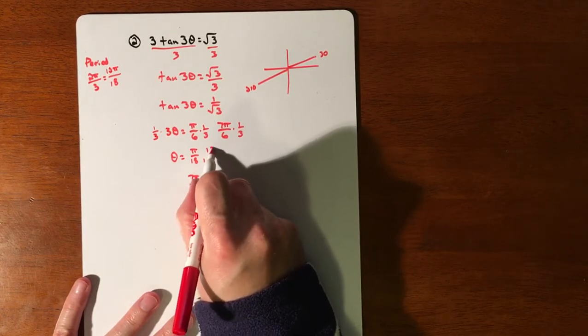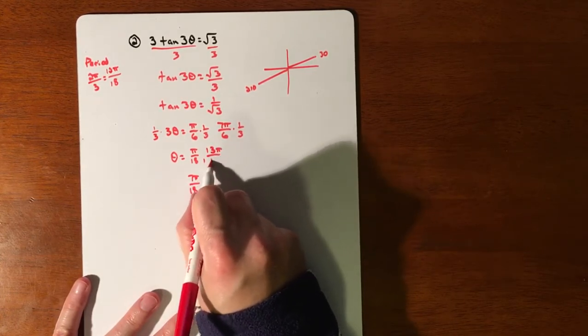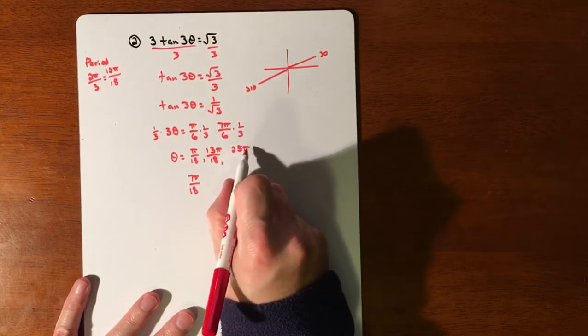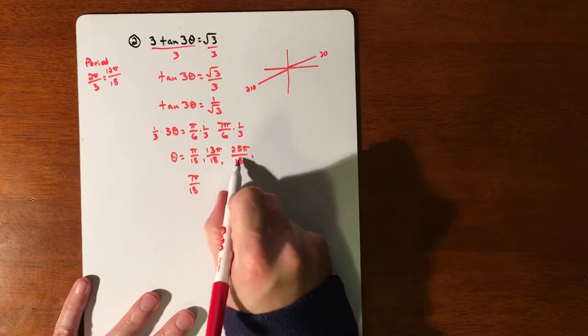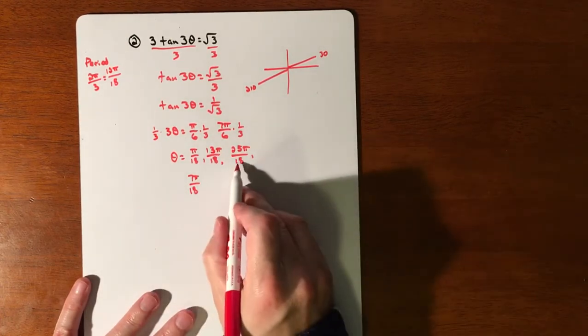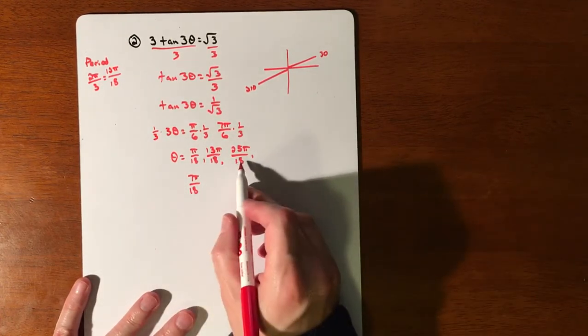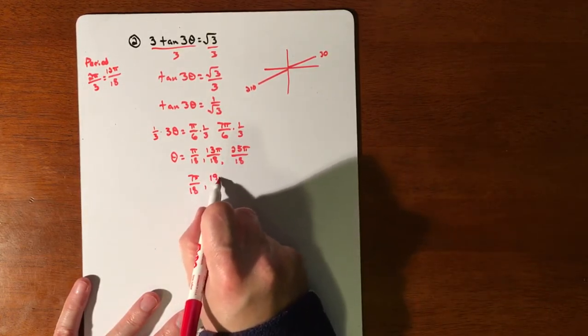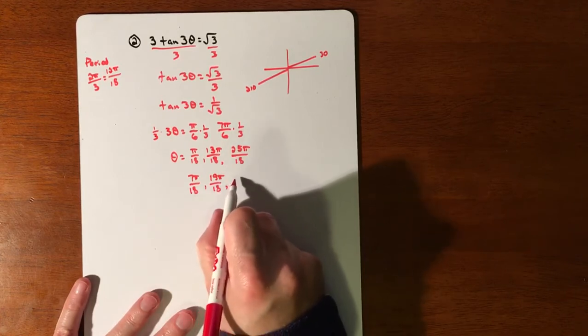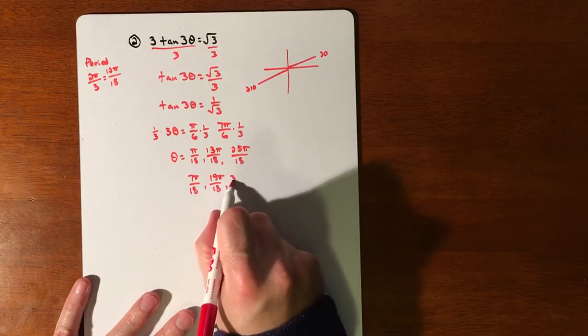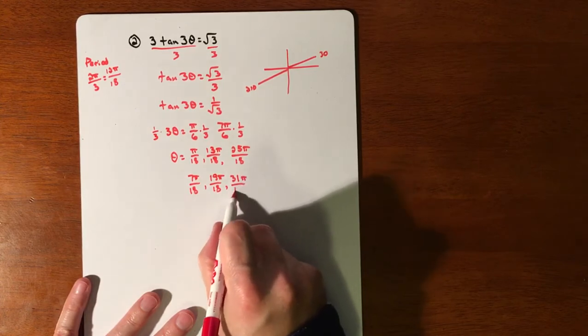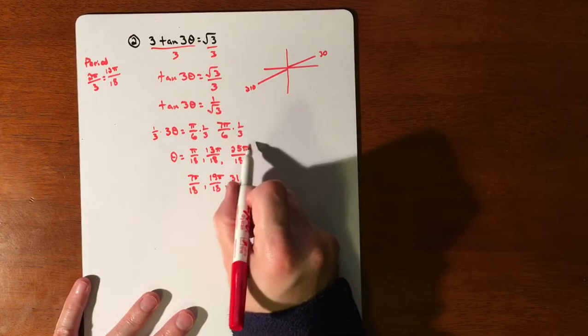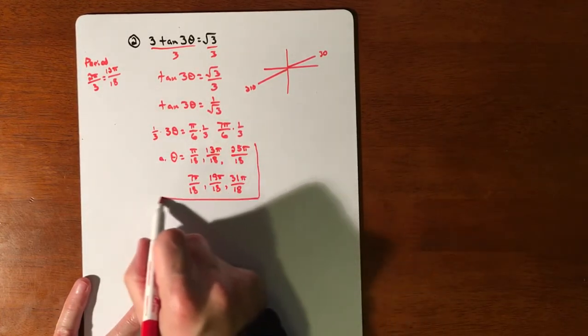So we'll add 12. That'll make 13π/18. If you add 12 again, that's 25π/18. And if you added it 1 more, you'd get more than 36π/18. You'd get 37π/18. So then that would be too much. And then if here, we get 19π/18 and 31π/18. And that is our 6 solutions. So that is when we're limited between 0 and 2π.